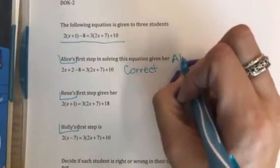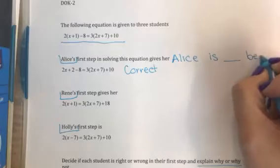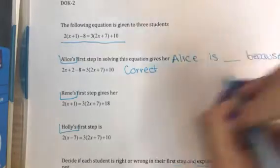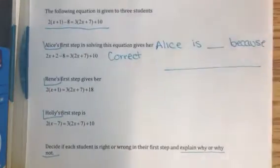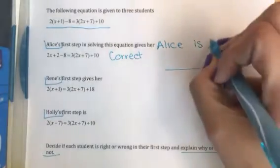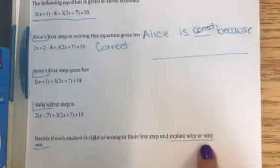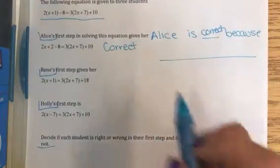So we can't just say correct, we need to give more information. So a better thing to do would be Alice is blank because blank, right? And we'd be doing the same thing for Renee: Renee is blank because blank.